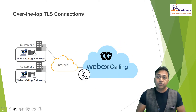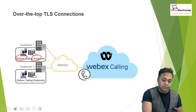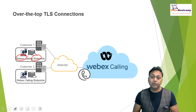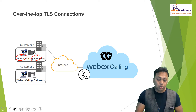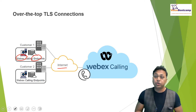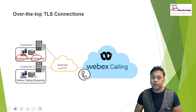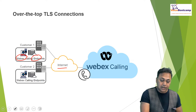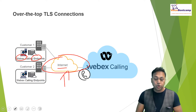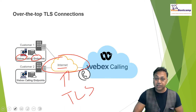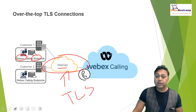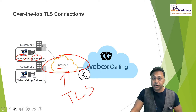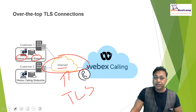Webex Calling endpoints, which are the phones or video devices available on the customer side, will use the public internet to register and communicate with devices via the internet through the Webex Calling data center. They will establish a connection over the internet, and this connection will be secured using TLS. SIP over TLS will provide secure SIP communications between the on-premise devices and the Webex Calling.